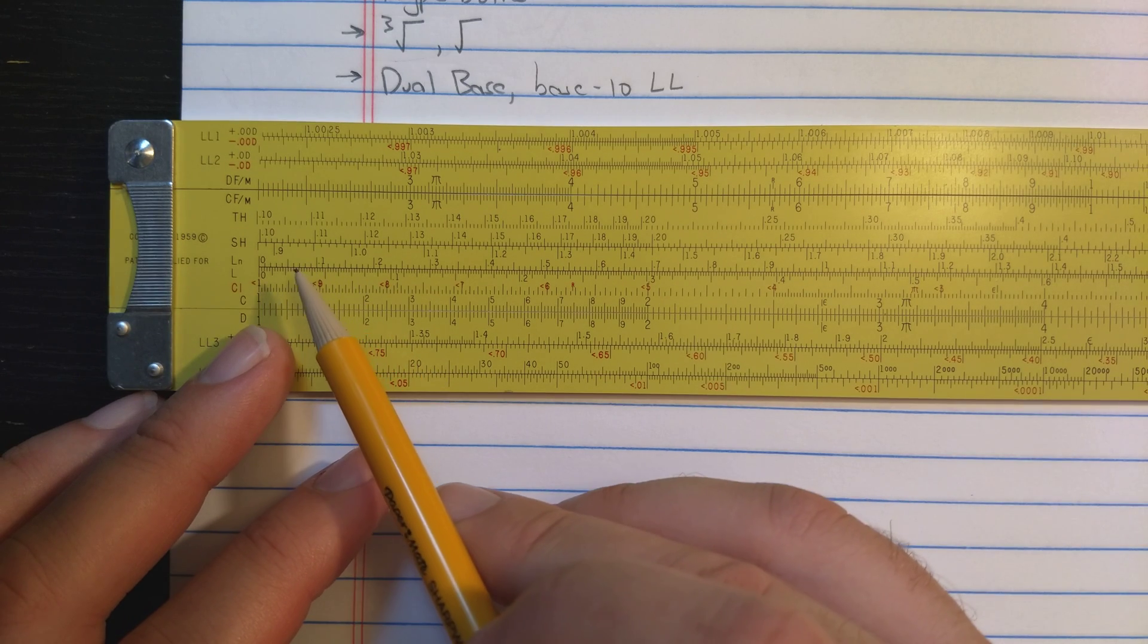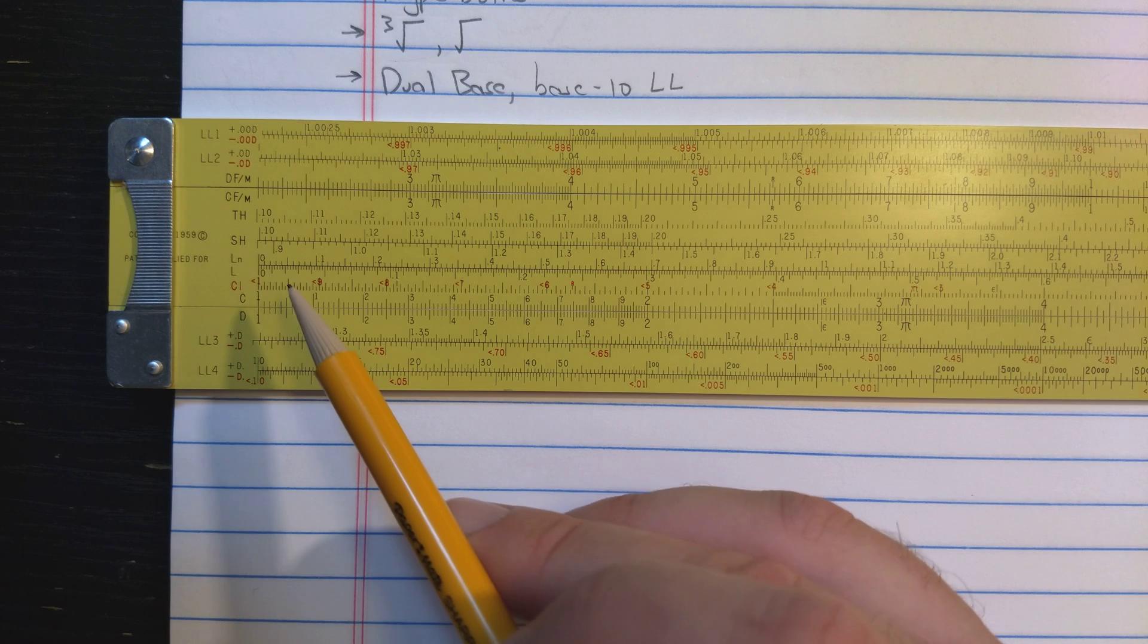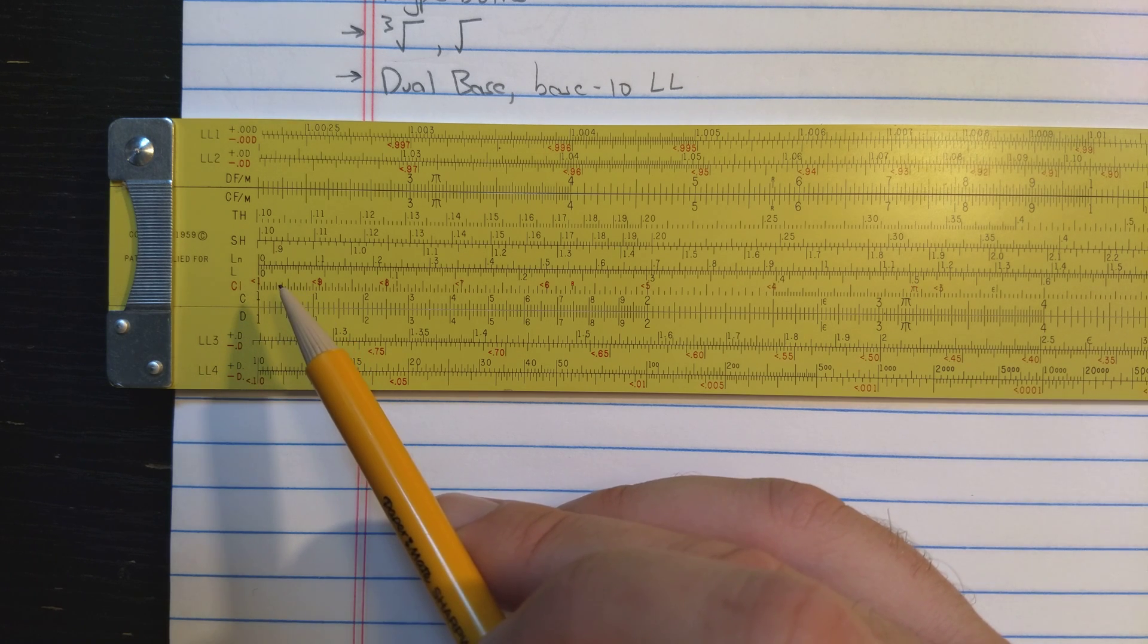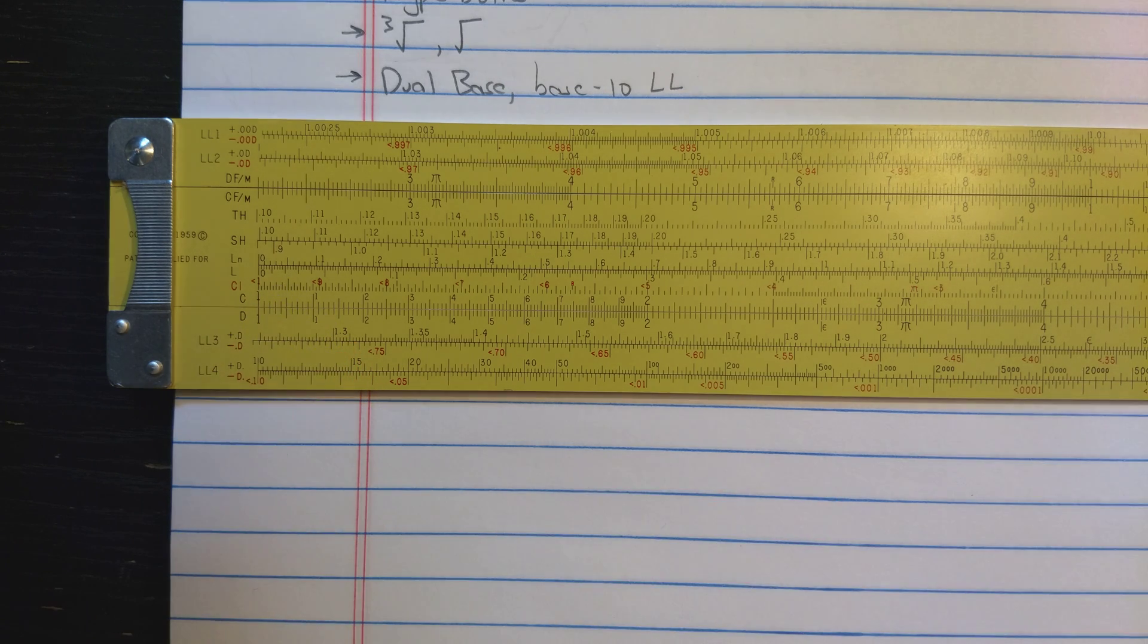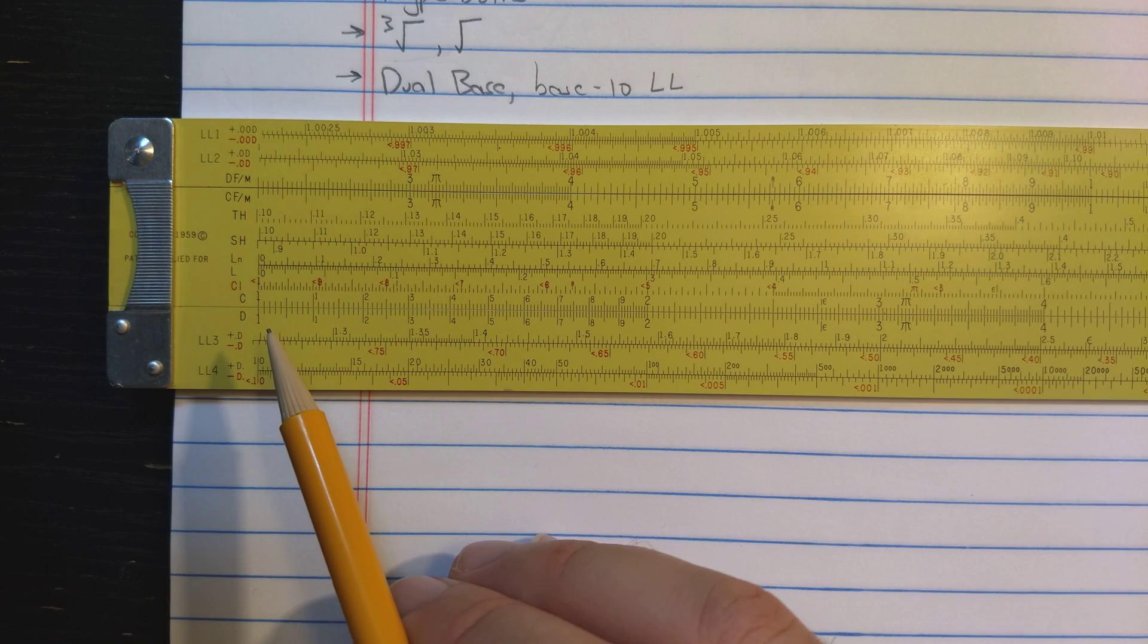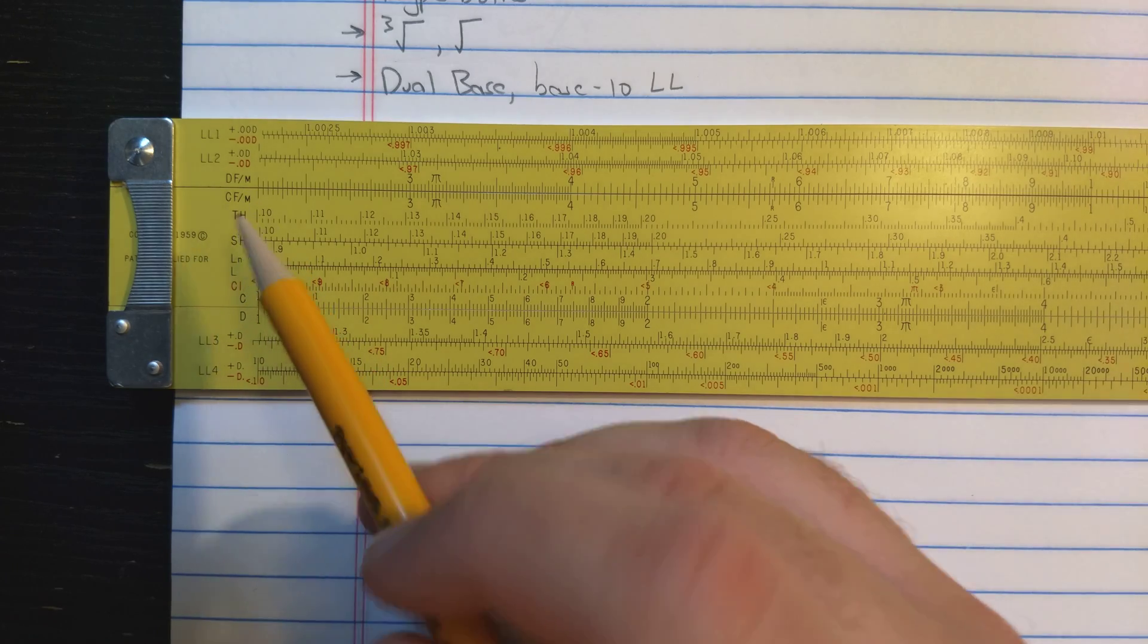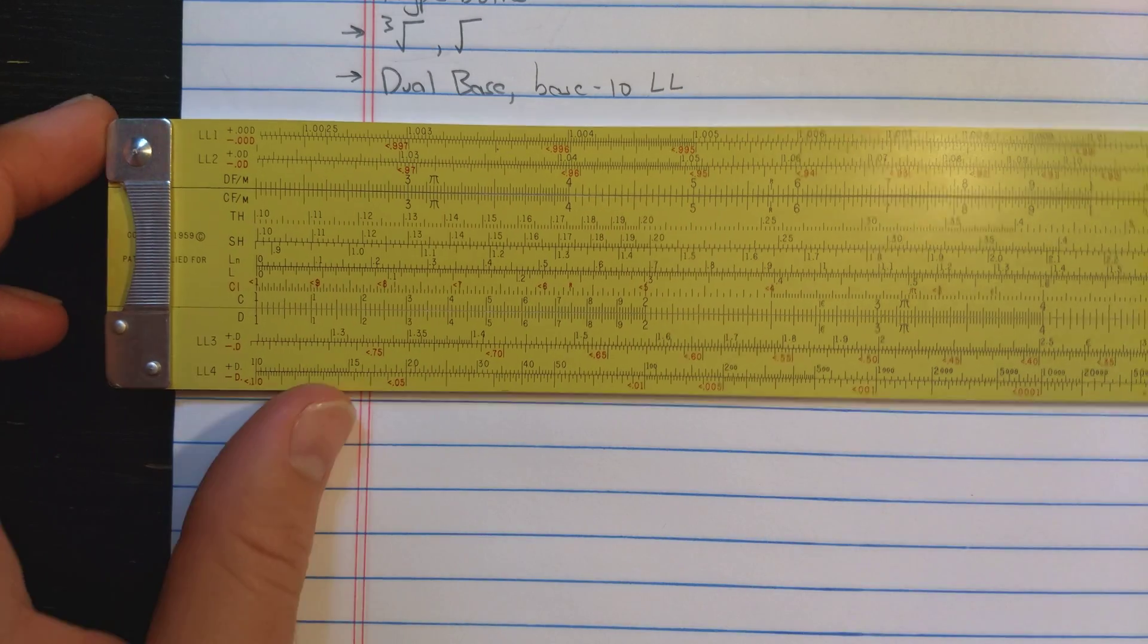These three scales are added to make this what Pickett calls a dual base slide rule. The Ln scale is kind of a boring scale. What it is, is it's an L scale, except for natural logs. So you read the natural log off of it instead of the base 10 log. I think that that's kind of a boring scale. It's actually added fairly late in the game for Pickett. The interesting scales though are Df over M and Cf over M. They're interesting for the following reason.